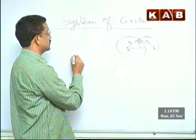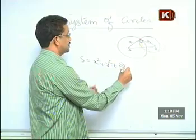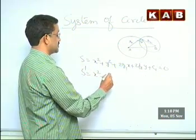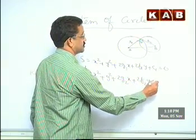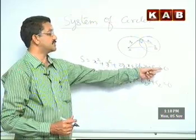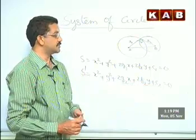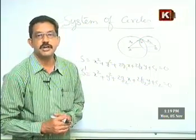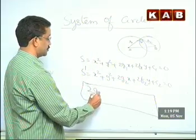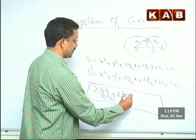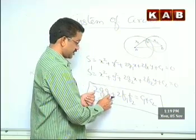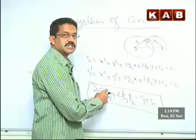If the first circle is x² + y² + 2G1x + 2F1y + C1 = 0 and the second circle is x² + y² + 2G2x + 2F2y + C2 = 0, then the condition for orthogonality — when they are perpendicular — is: 2G1G2 + 2F1F2 = C1 + C2. You must remember this result very carefully.